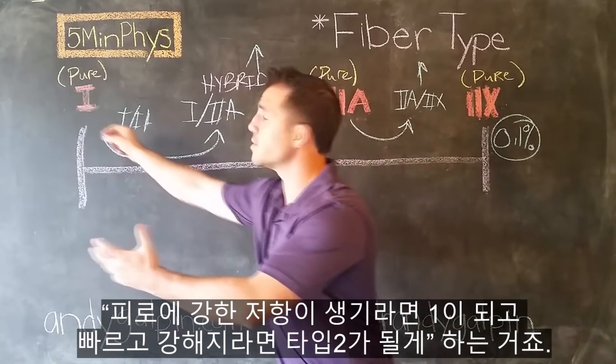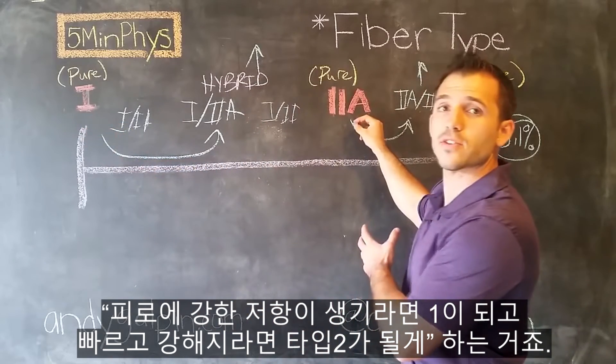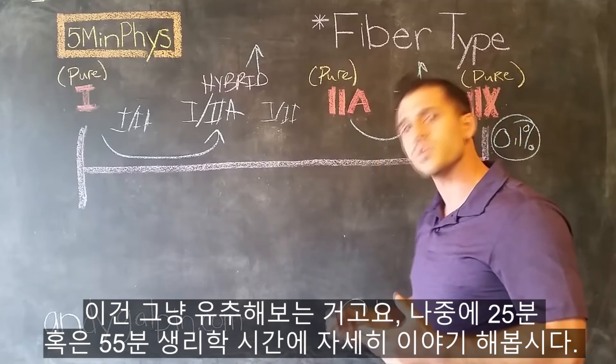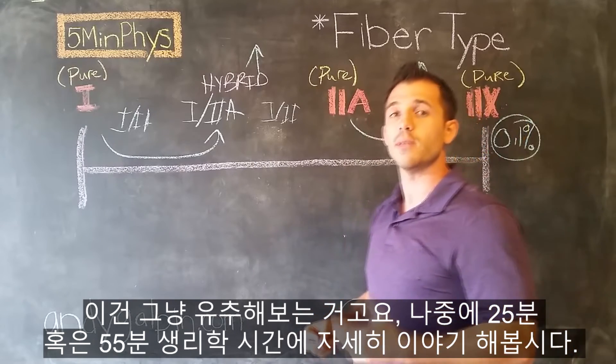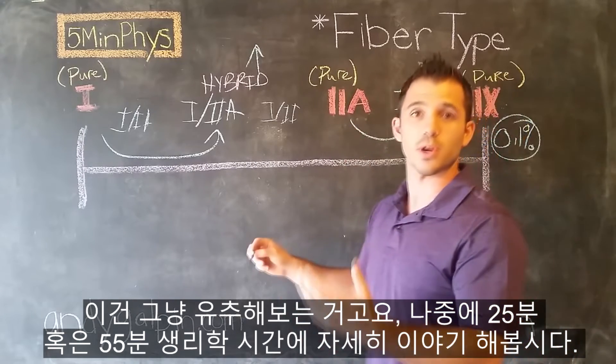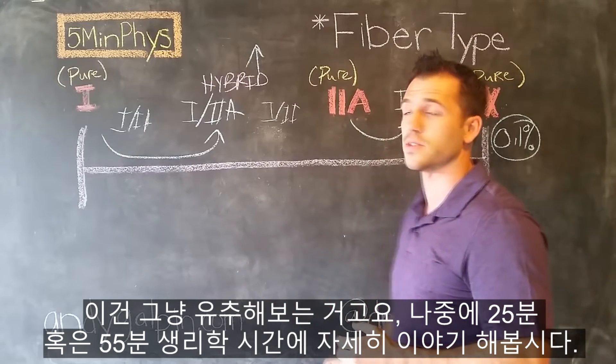So we're going to hang out in the middle until you tell us how you want us to function. You want us to be very fatigue resistant, we'll become a type 1. You want us to be very fast, we'll become a type 2. Let's guess, and we can talk in more detail later in one of our other segments, maybe our 25 or 55 minute physiology section.